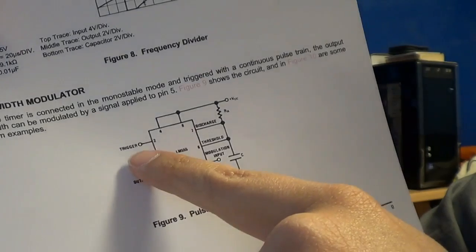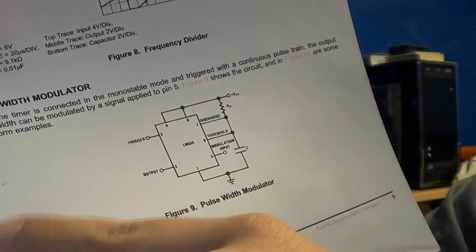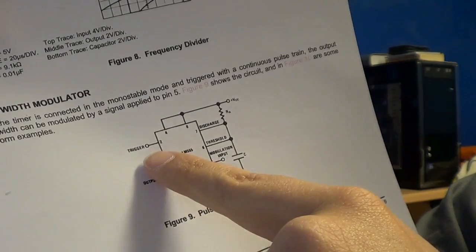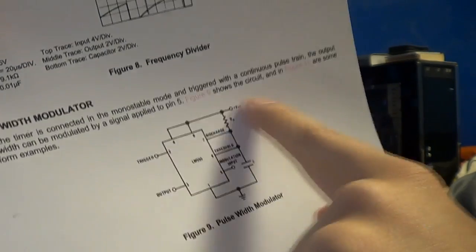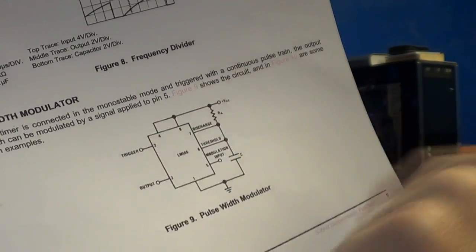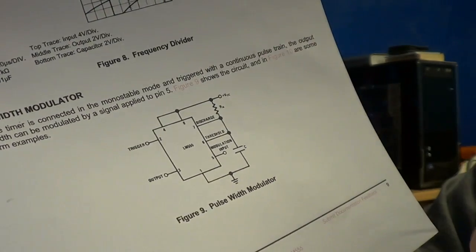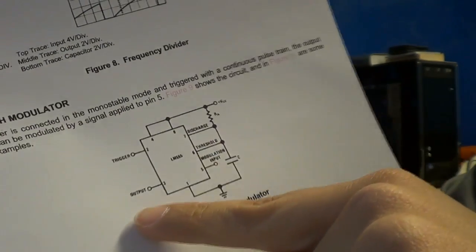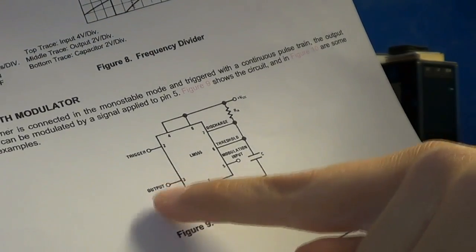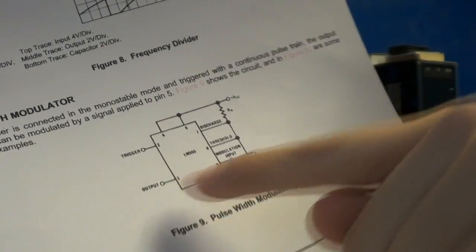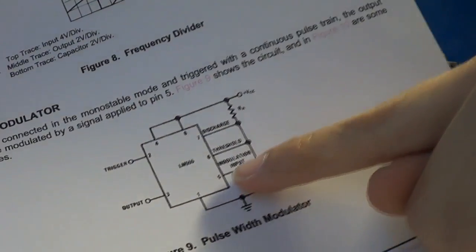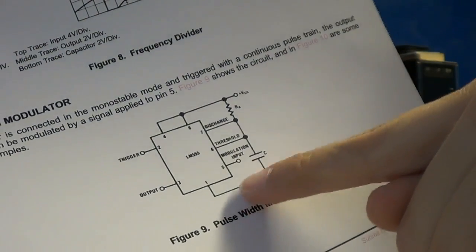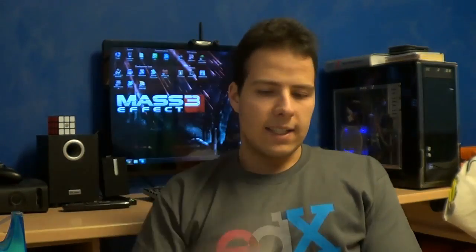We need to build another device that generates the pulse train for this to work, and I will show you how to do that. The key point is you can modulate the output through pin 5 of this integrated circuit. When I was looking at this datasheet I had some ideas to improve it.